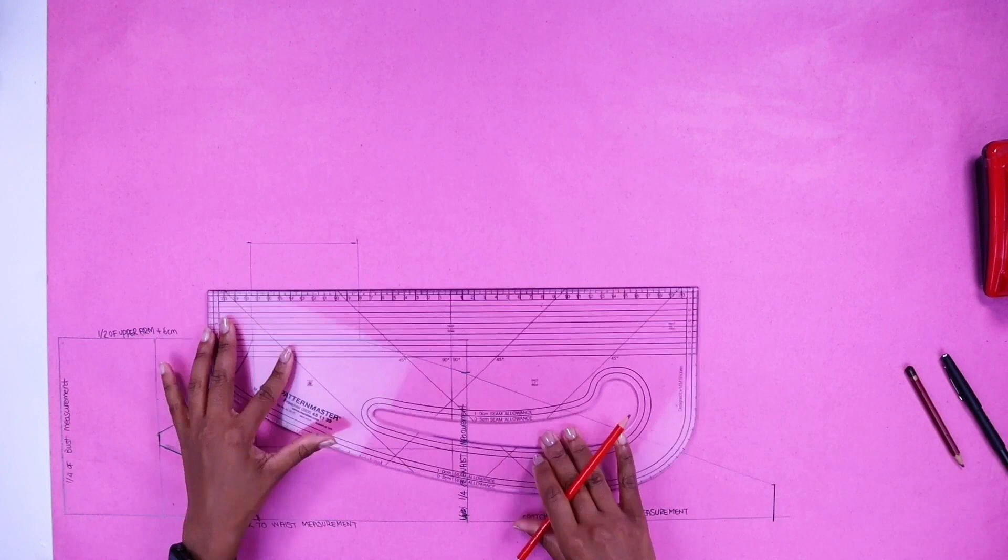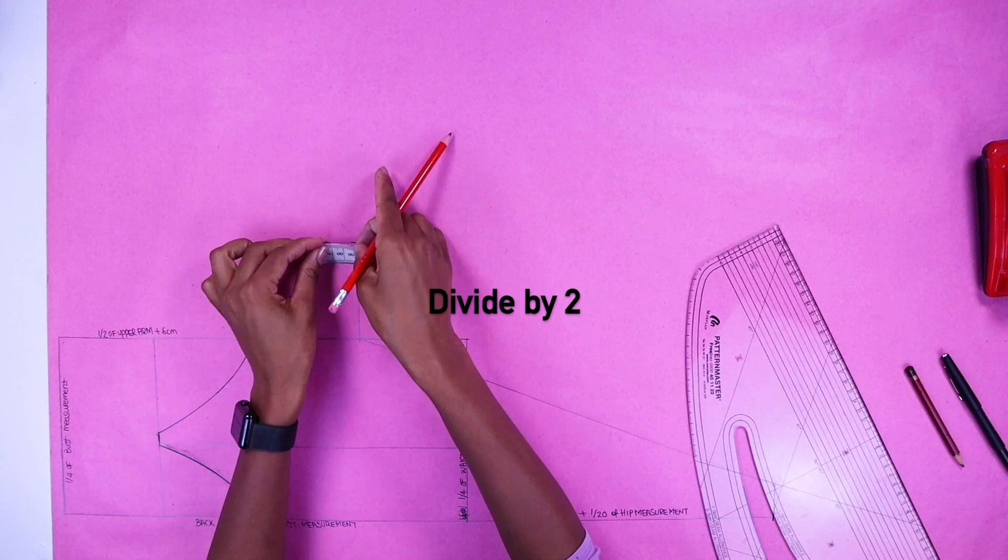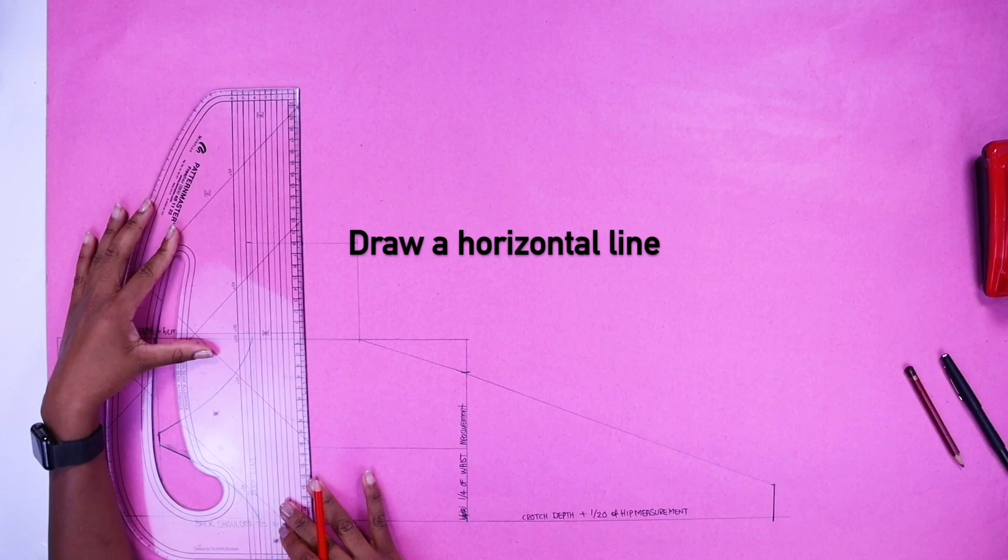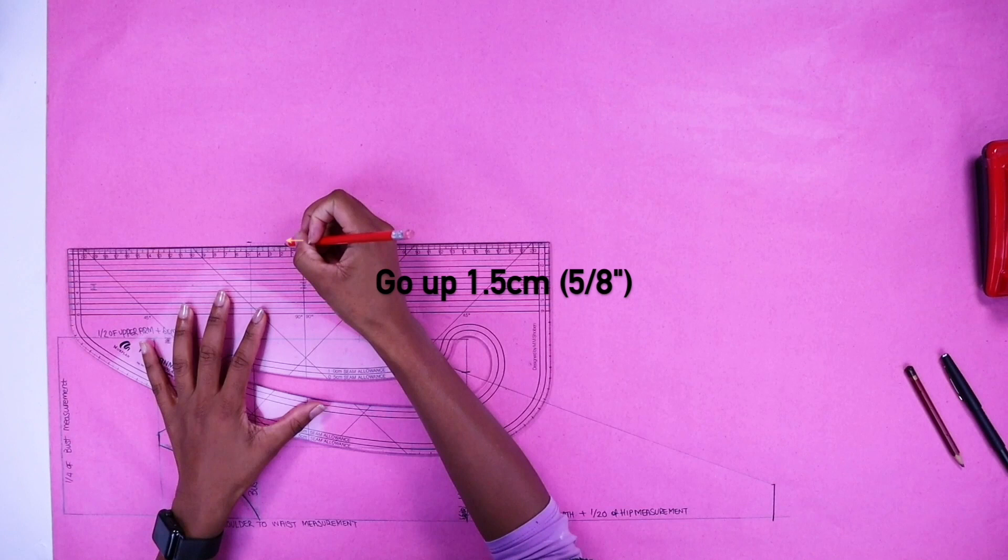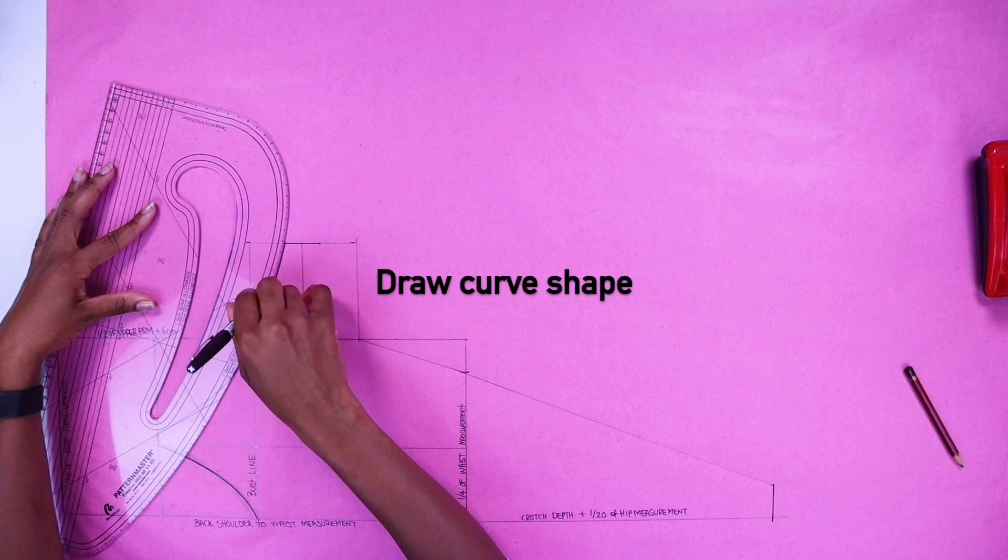Now divide this line by two. Draw a horizontal line. Now go up 1.5 centimeters. Now go down 1.5 centimeters. Now connect that line. Draw your curve shape. Repeat the one at the bottom as well.